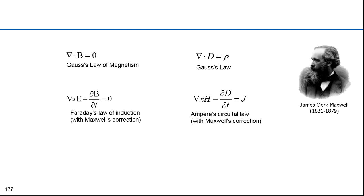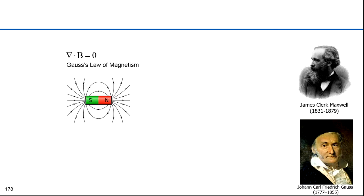The foundation for Einstein's theory of special relativity was Maxwell's equations, which he wrote 150 years ago. They unified electricity, magnetism, and light. The first equation expresses the view that there are no magnetic monopoles — magnets always have a north and south pole. Magnets are always dipoles.